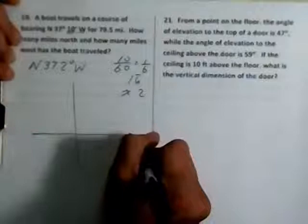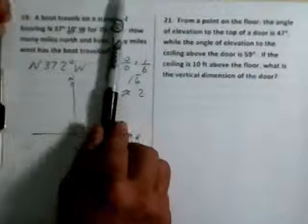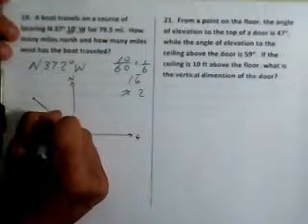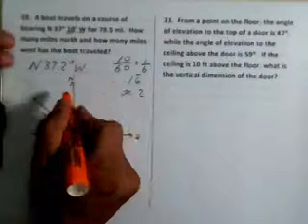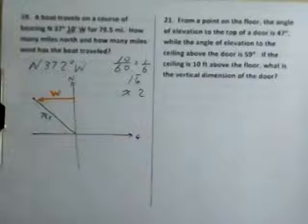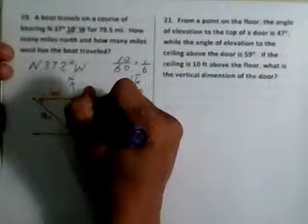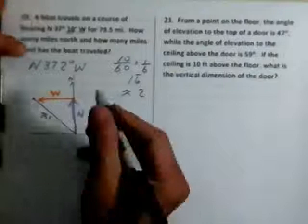How many miles north and how many miles west has the boat traveled? Let's set it up. We always like to start at the origin if possible. Here's east, here's north. Both travels on a bearing up north, starting at north, 37.2 degrees west. So it's going to go in that direction right here for 79.5 miles. And then what it's asking is how many miles west has it gone? So here's the west direction. And the north direction. It's located right over here. That's what we're looking for. Of course they also give you one more information. That angle is going to be 37.2 degrees.